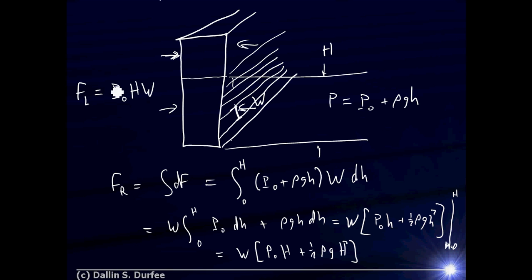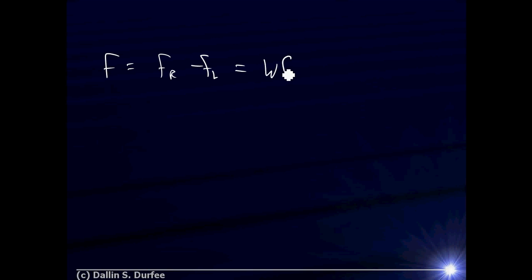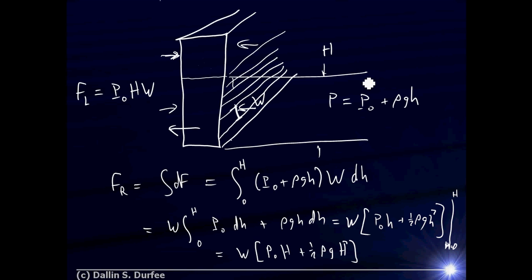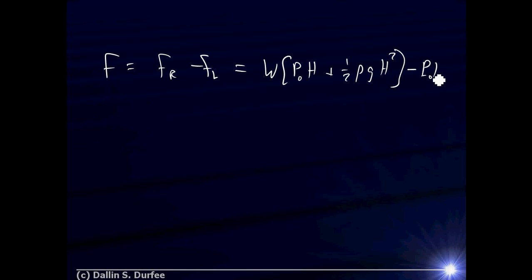To get the net force, I take the force on the right minus the force on the left. The force on the right is W·(p-naught·H + one-half·rho·g·H²). The force on the left is p-naught·H·W. The p-naught·H·W terms cancel, and we're left with a net force of one-half·rho·g·W·H².